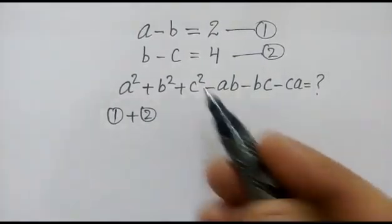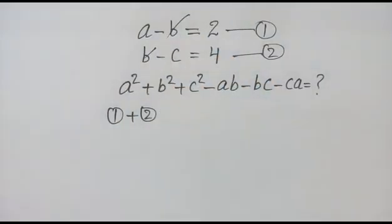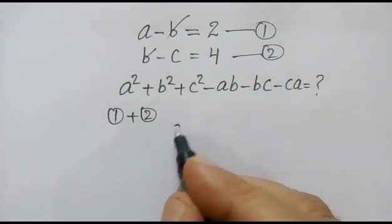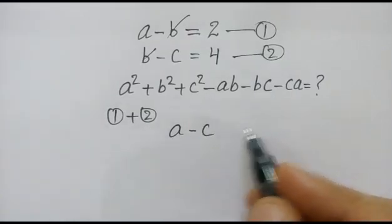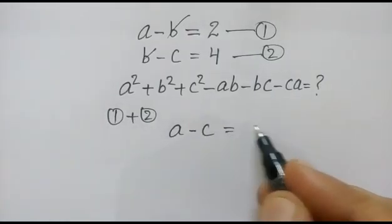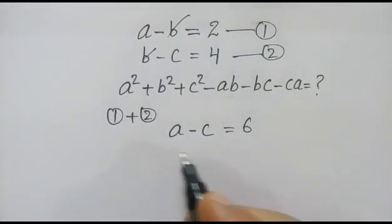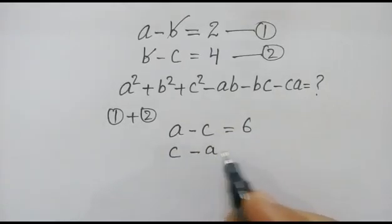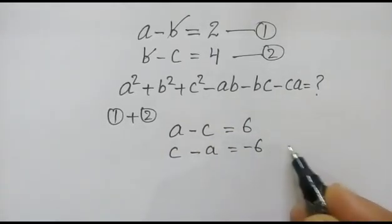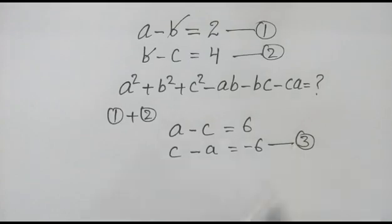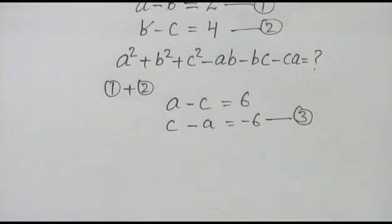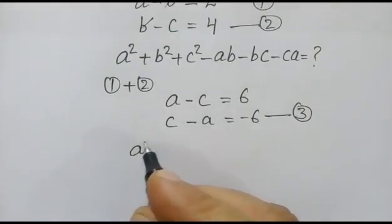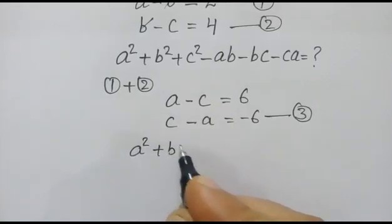After adding and cancelling, we have a minus c is equal to 6, or c minus a is equal to minus 6. We call this equation number 3. Now we have to find the value of a squared plus b squared plus c squared minus ab minus bc minus ca.